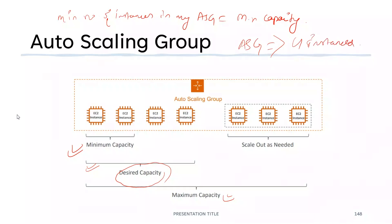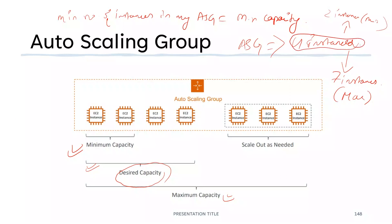You can go as far as seven instances — that's the max capacity — and you can scale in to two instances, which is the minimum capacity. The desired capacity is the number of instances you want to run at this particular moment. The present moment describes the desired capacity: how many instances do you need right now? Scale out means adding more instances, scaling in means removing instances.